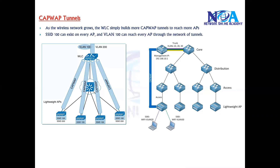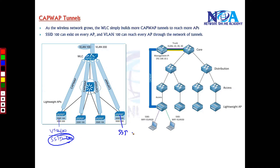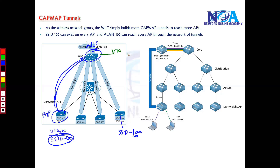SSIDs can exist on each and every access point. For example, if VLAN 100 users are configured with SSID 100 on one access point and want to communicate with SSID 100 users on a different access point, the traffic is encapsulated inside the tunnel, sent to the WLC, which de-encapsulates it, checks the VLAN ID, forwards it to the switch, and from there to the nearest access point and back to the end device.